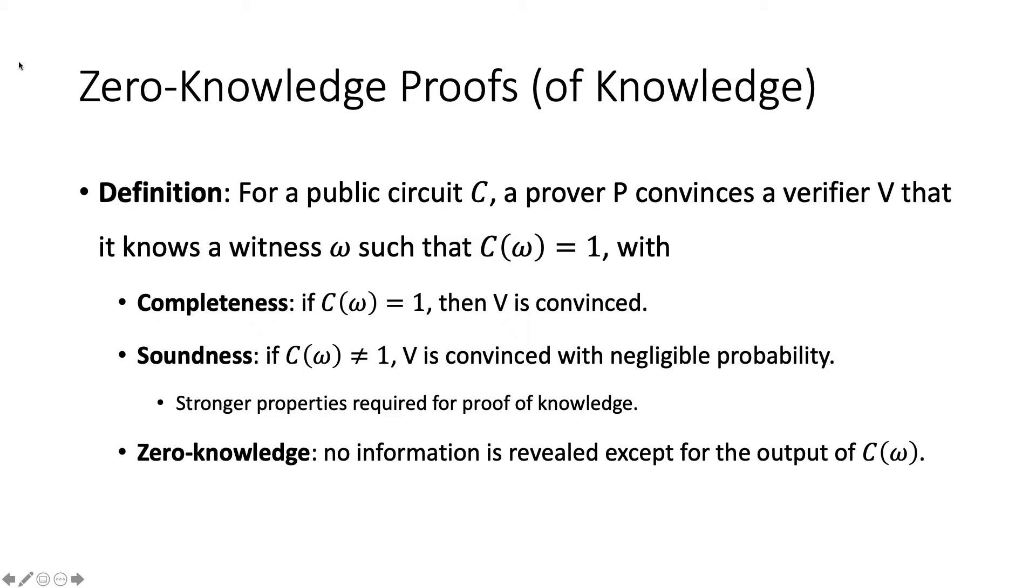Completeness means that if the prover has a correct witness W, then the circuit takes the input W and outputs 1, and the verifier would be convinced. Soundness means that if the prover does not have a correct witness, there's a negligible probability that the circuit would output 1 and V would be convinced. The proof of knowledge is a stronger property than soundness and requires some additional effort. The zero-knowledge property means no information is revealed except for the output of the circuit.